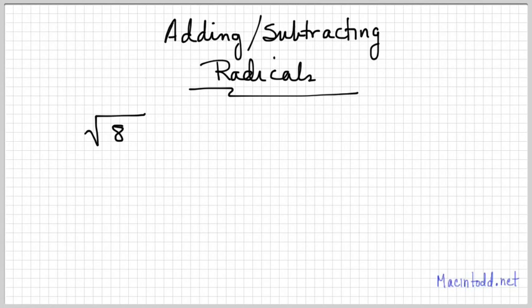This is a quick lesson on adding and subtracting radicals, specifically square roots, though all radicals work the same way. First, we need to be able to simplify radicals. For example, square root of 8 is 4 times 2, and when you have multiplication you can break these apart, which gives you the square root of 4 is 2 times root 2.